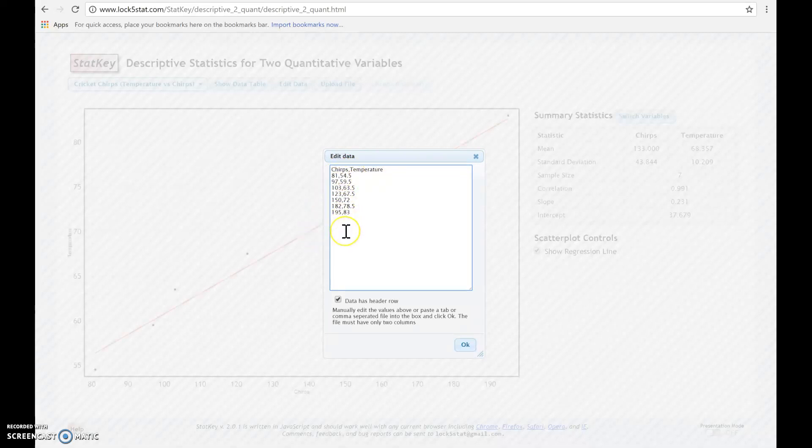And then we're going to enter all of the data points, and we enter them as a pair. So for each chirp, we enter the corresponding temperature and separate it by a comma. And then we would click OK.